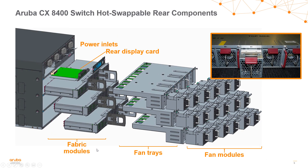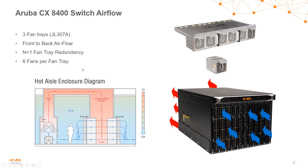Here we have an exploded view of the rear of the switch. We can see the three fabric modules as they get installed into the back of the switch, and behind those are the three fan trays with fan modules installed. We can also see the power supply units and the rear display card. The airflow on the 8400 is front to back, so keep that in mind when positioning the switch in the data center. There are three fan trays with six fans per tray providing redundancy for the switch.